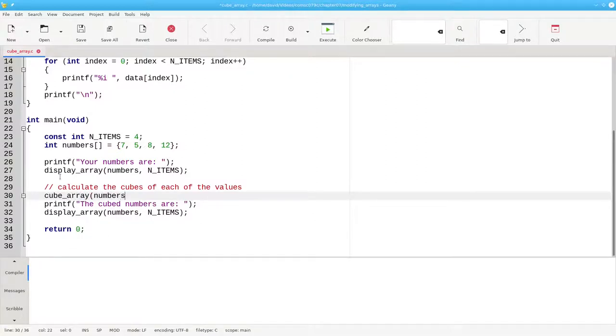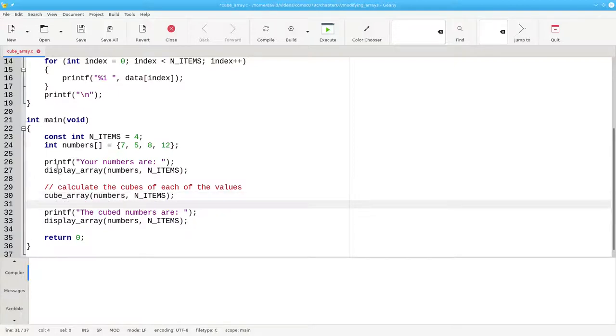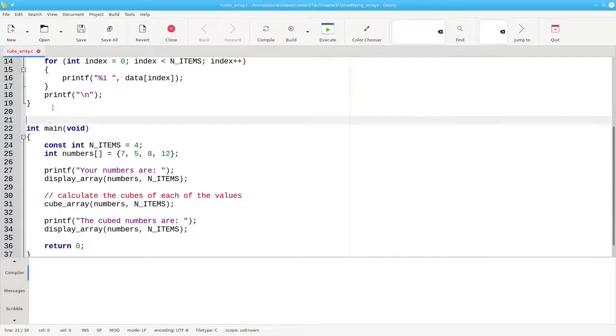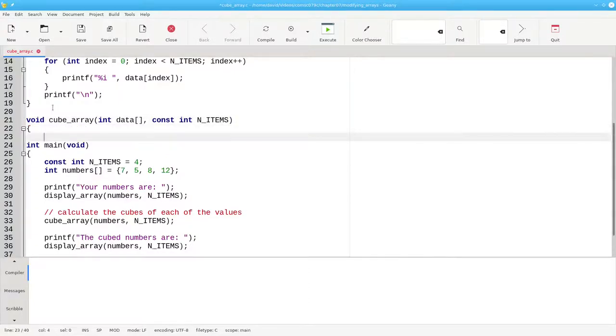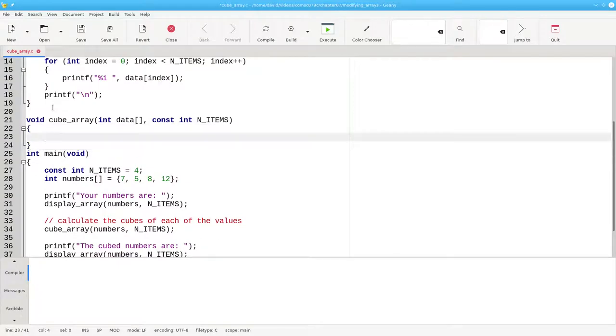We'll pass the array to it and the number of items. Here's the function. It's a void function. The name will have an int array called data and a constant integer N_ITEMS as the parameters. The function body will be the loop that cubes the array elements.